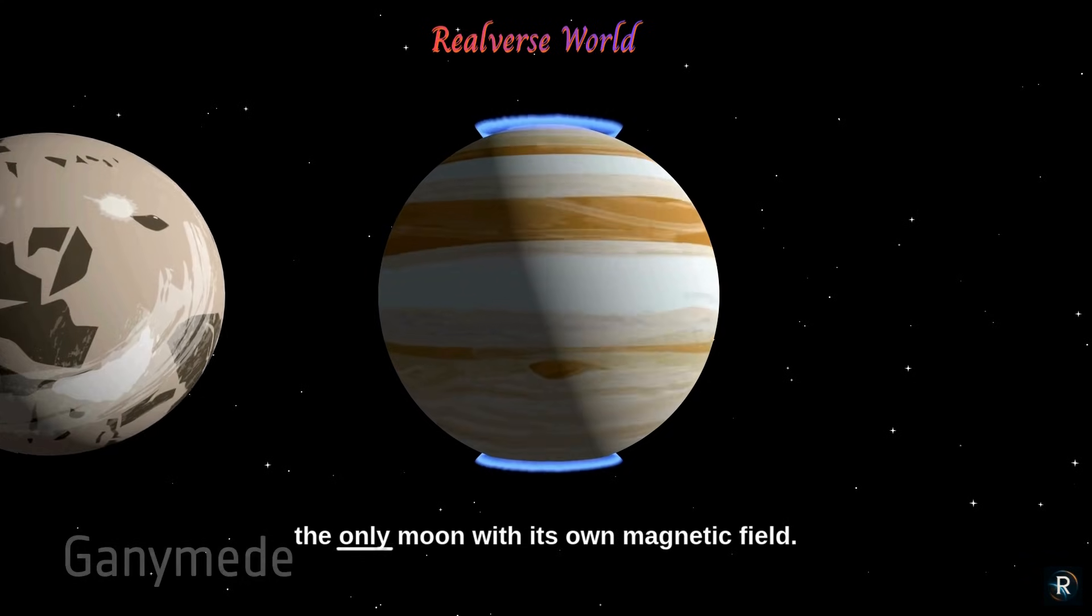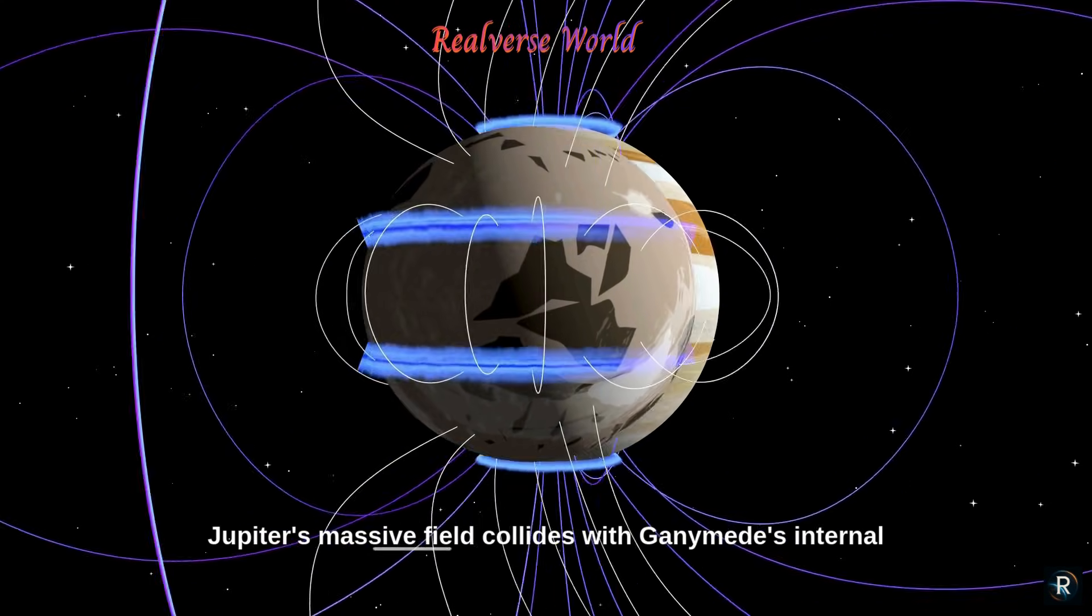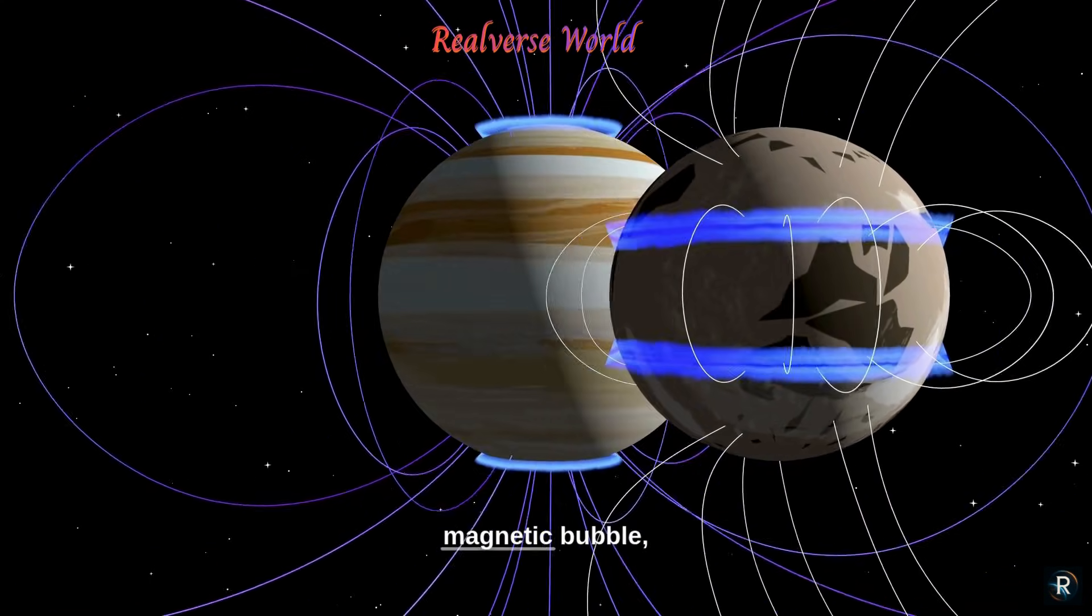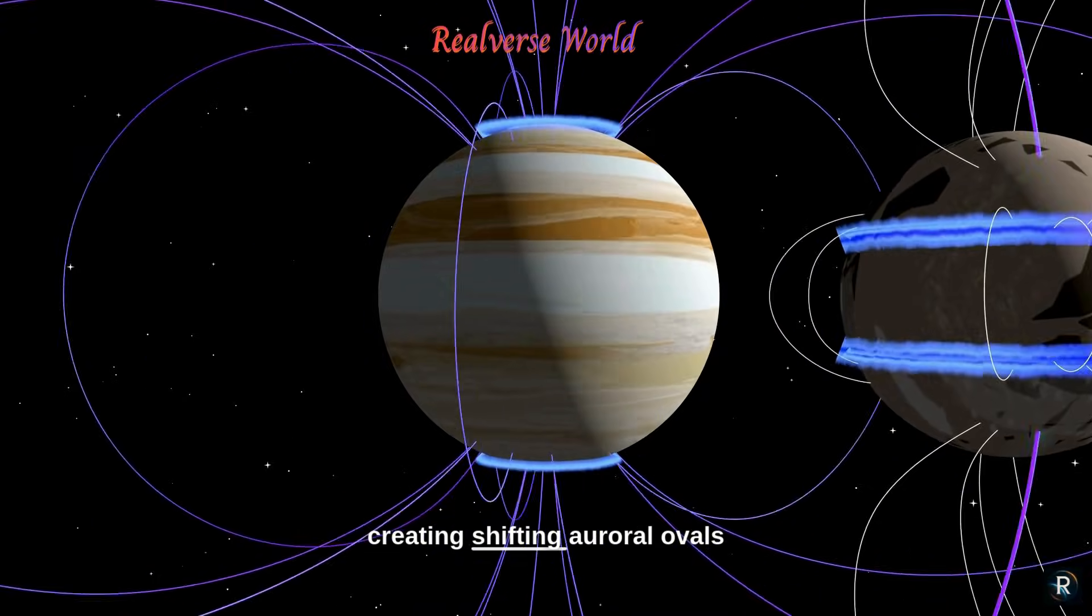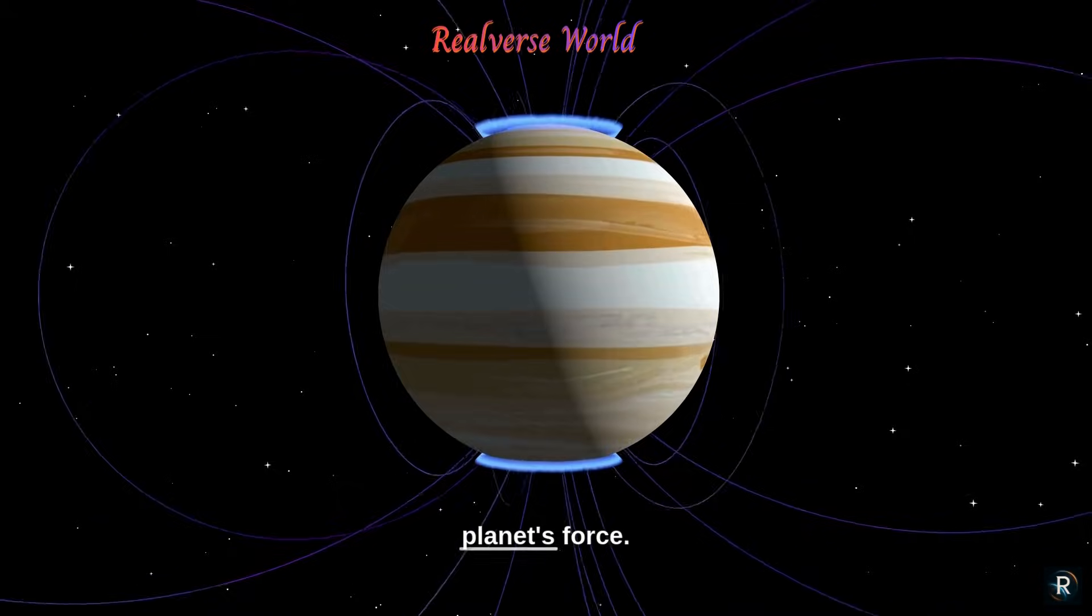Next is Ganymede, the only moon with its own magnetic field. Here, Jupiter's massive field collides with Ganymede's internal magnetic bubble, creating shifting auroral ovals shaped by both the moon's buried ocean and the giant planet's force.